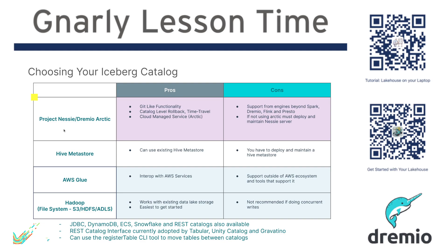The beauty of this is that your catalog holds references to all your tables. So when you do branching, rollbacks, or time travel at the catalog level, it's not doing it one table at a time — it's doing all tables. Imagine you create a tag for each day's data. Instead of having to reference that tag for each table individually, you can just set your context to that tag and all your tables will be operating as if they were at that point. This gives you catalog-level multi-table semantics for versioning, which can be really useful.